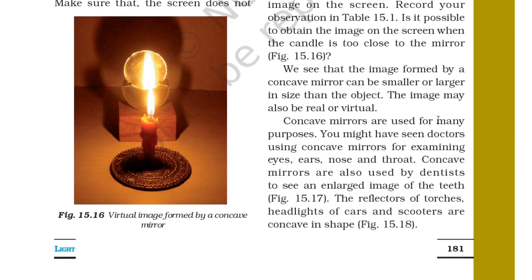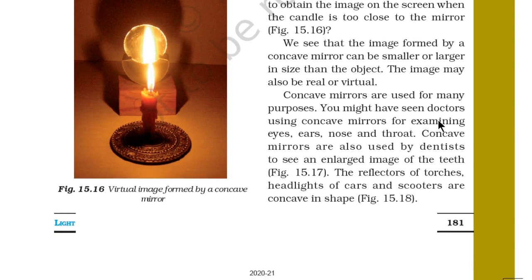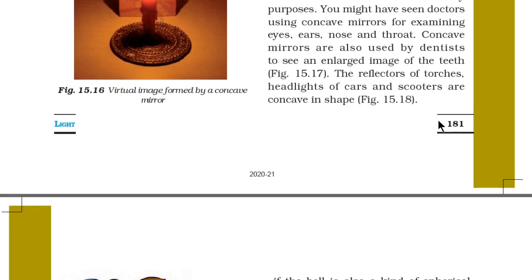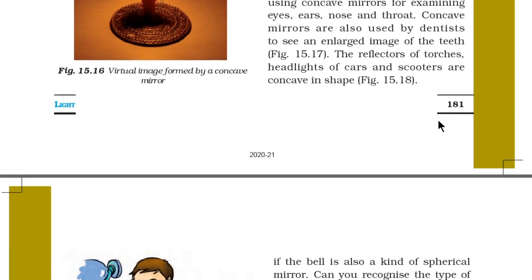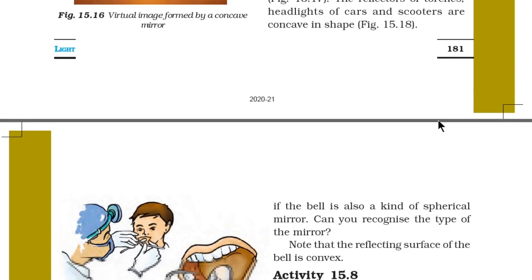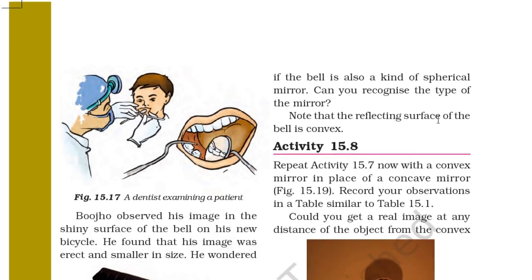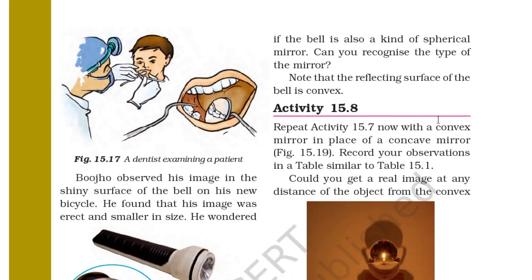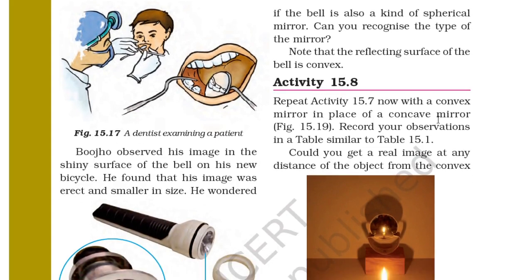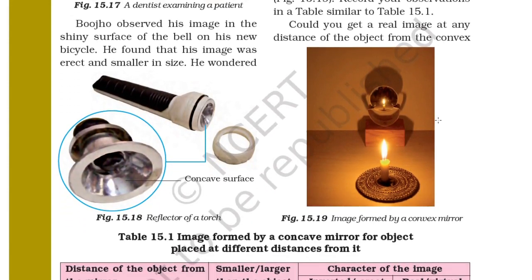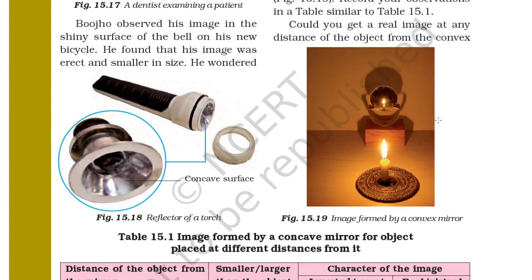Concave mirrors are used for many purposes. Doctors use concave mirrors to examine ears, eyes, nose and throat. Dentists use concave mirrors to see an enlarged image of the teeth. The reflectors of torches and the headlights of cars and scooters are concave in shape. Bojo observed his image in the shiny surface of the bell on his bicycle — it was erect and smaller in size. In a torch, the reflector is also made of a concave surface.